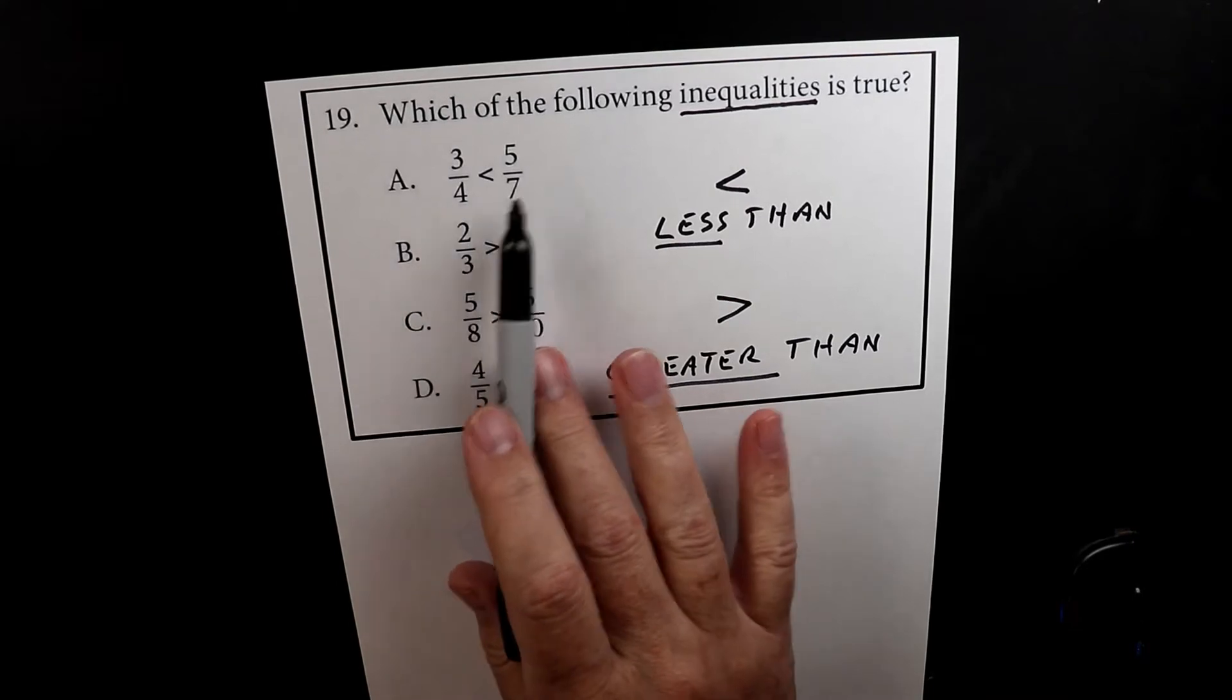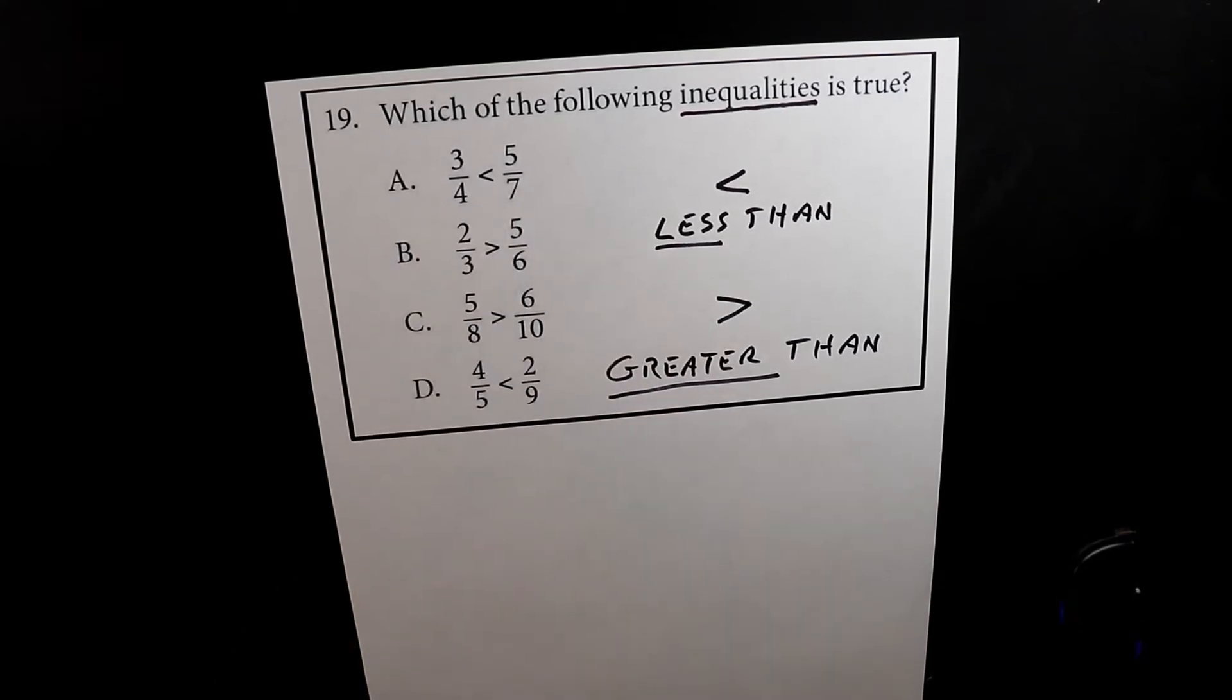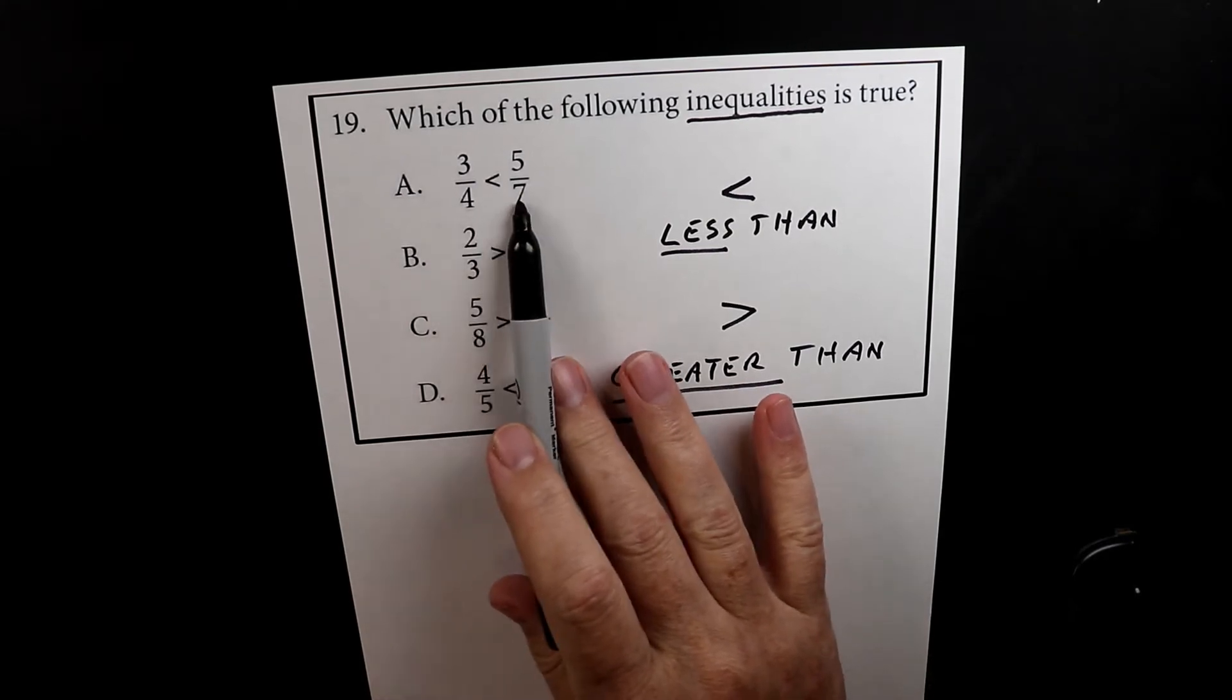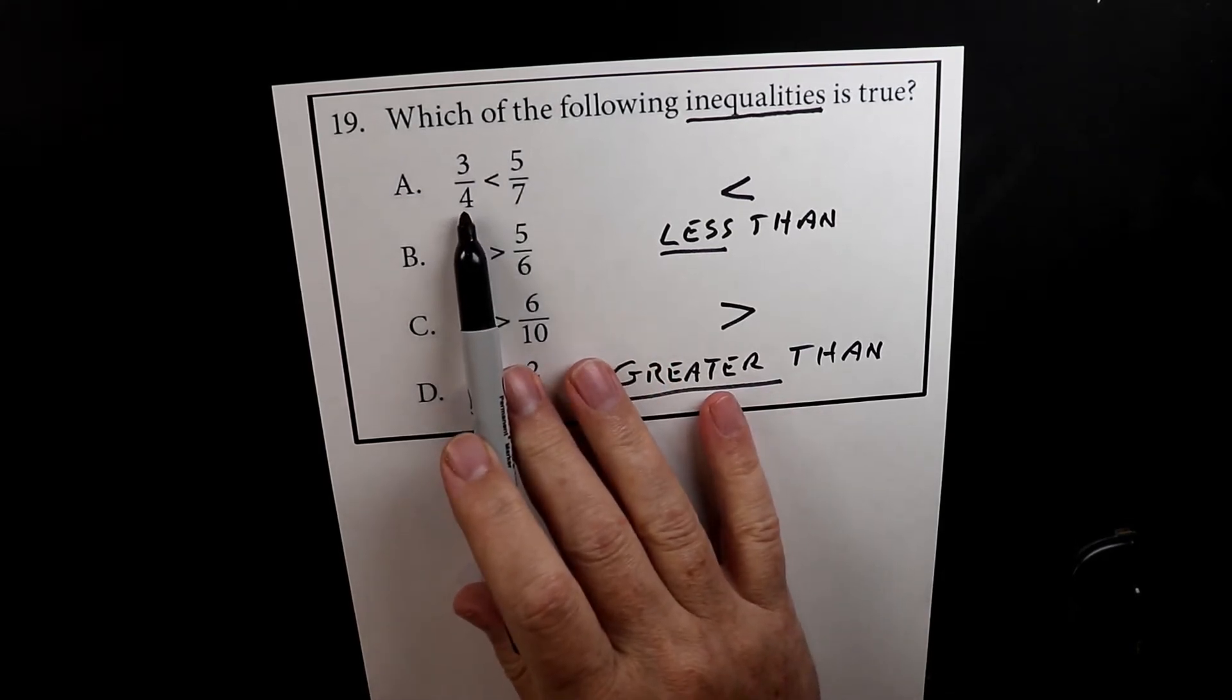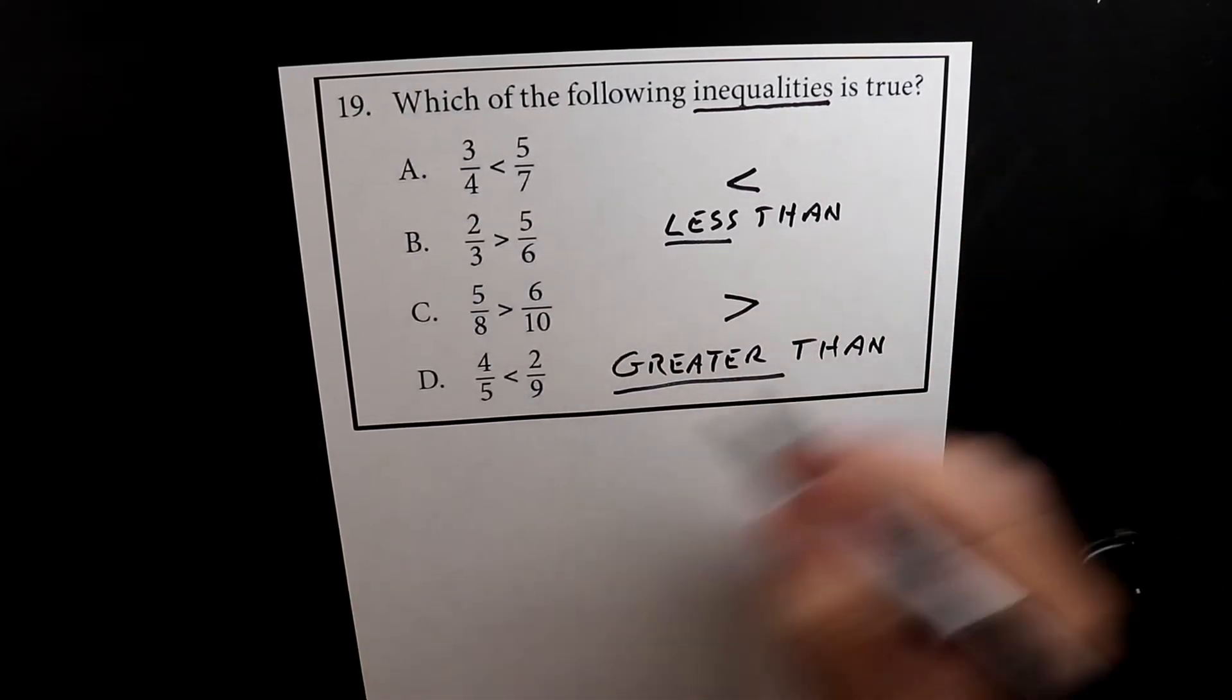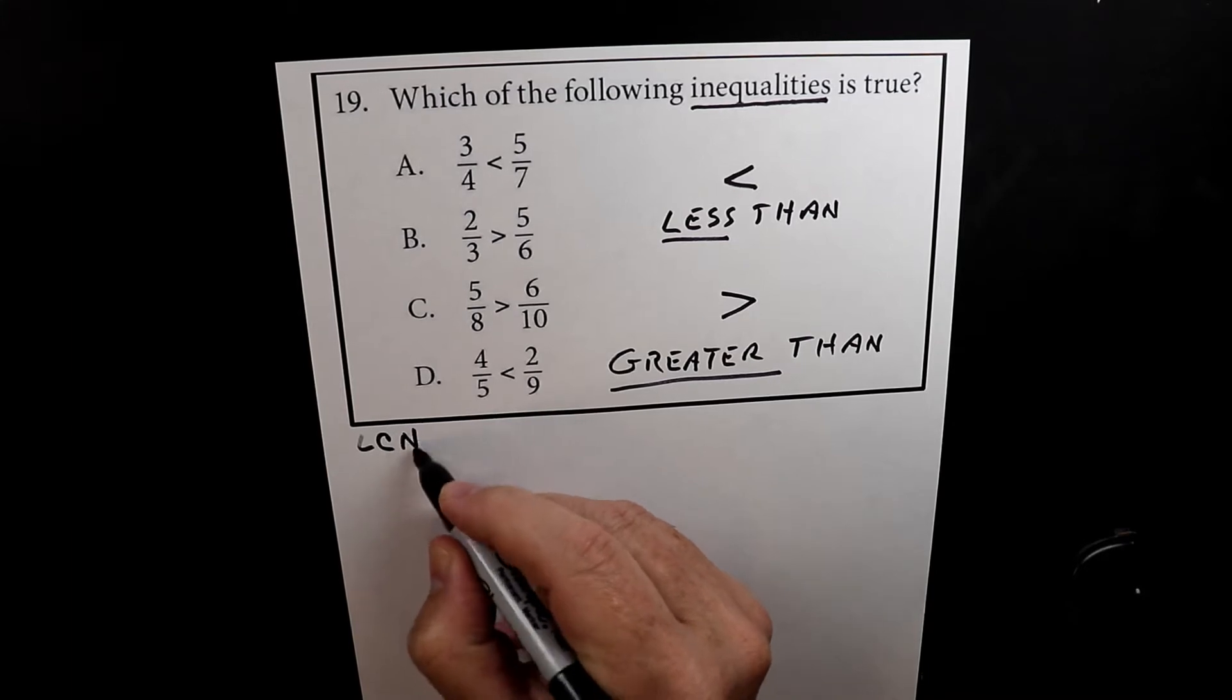Now we could put these things into decimals, but I want to do a review of converting fractions so they have the same denominator. So we're going to look for something called the least common multiple, the LCM.